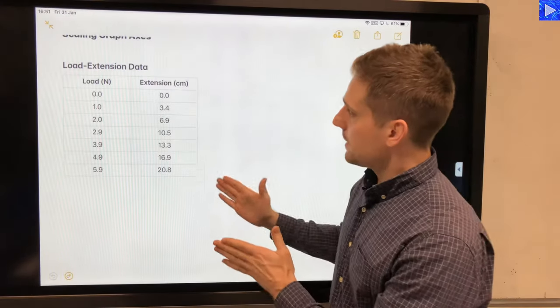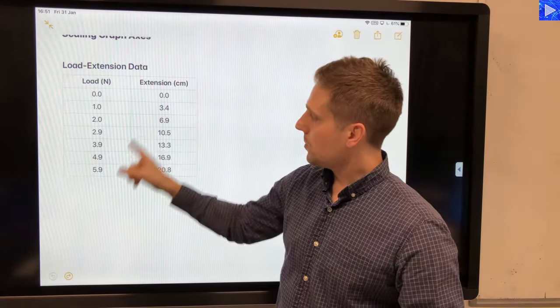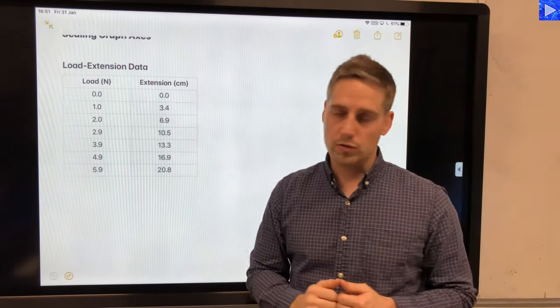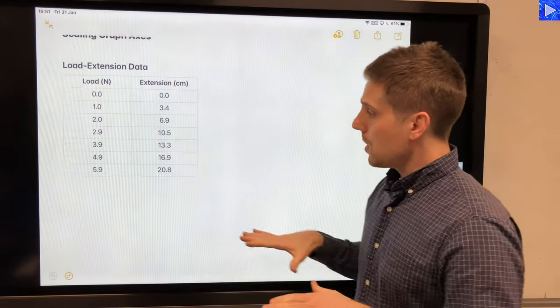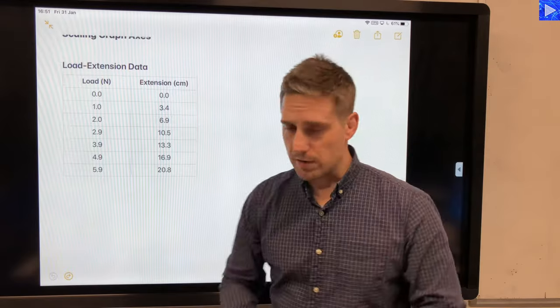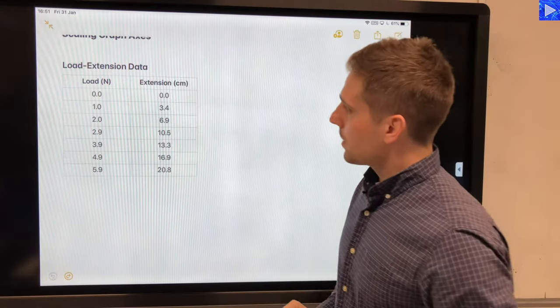So like I said, this is my first set of data. I've got load against extension, this is a Hooke's law experiment. So I'm going to put that onto my graph grid.